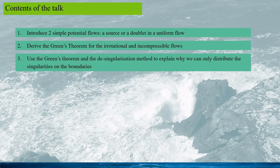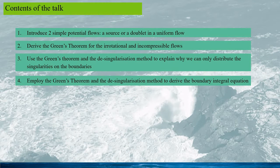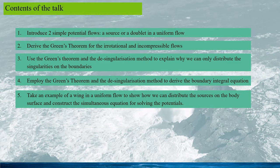I will use the Green's theorem and the desingularization method to explain why we can only distribute the singularities on the boundaries, rather than distributing the singularities in the fluid or in the structure. Then I will employ the Green's theorem and the desingularization to derive the boundary integral equation, which can be used for solving the potential function. Finally, I will take an example of a wing in a uniform flow, to show how we can distribute the sources on the body surface, and how to construct the simultaneous equation for solving the potentials.